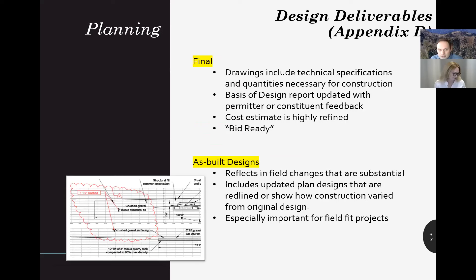Final designs are effectively preliminary designs refined to where technical specs and quantities can be provided to an installer or contractor — including mobilization locations, dewatering plans, erosion control, and specific quantities and types of materials. They should incorporate comments from permitters and stakeholders and be bid ready to some degree. As-built designs are a post-construction deliverable necessary if substantial changes were made during construction. As-builts can be as simple as a profile drawing with a revised elevation called out in red, or can be comprehensive design reports documenting what was produced during construction. They are a particularly important deliverable for field fit projects that may not have provided highly refined drawings initially — construction supervision is critical to ensure as-builts are produced accurately.